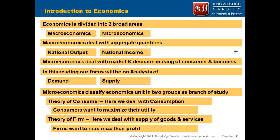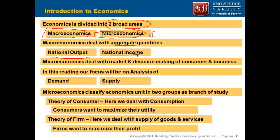Economics is broadly divided into two areas. First is macroeconomics and another is microeconomics. In our course we will focus on microeconomics. Macroeconomics deals with aggregate quantities at a broad level, like the national level — national output and national income. However, microeconomics deals with the market and decision making regarding the consumer and businesses.